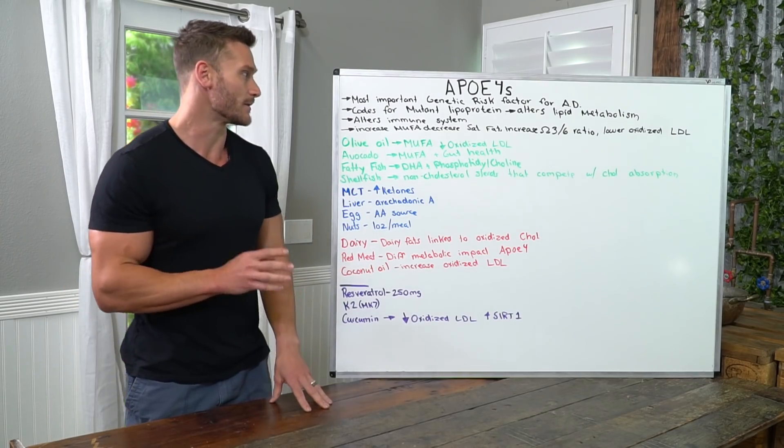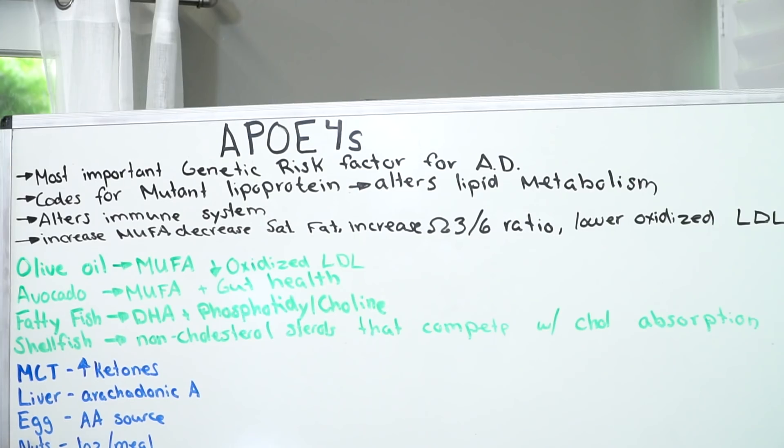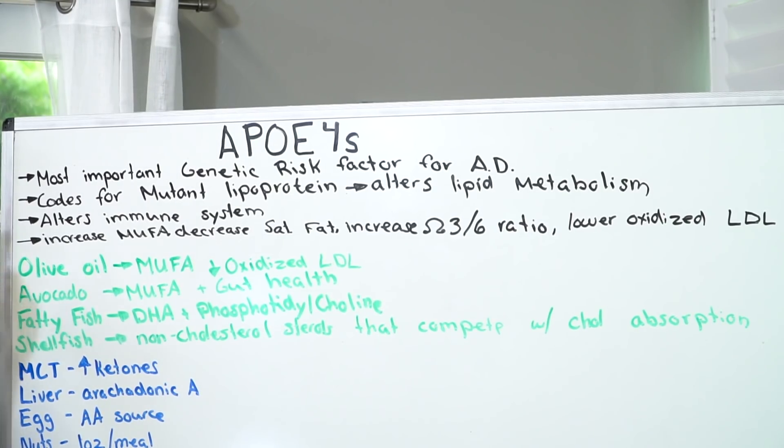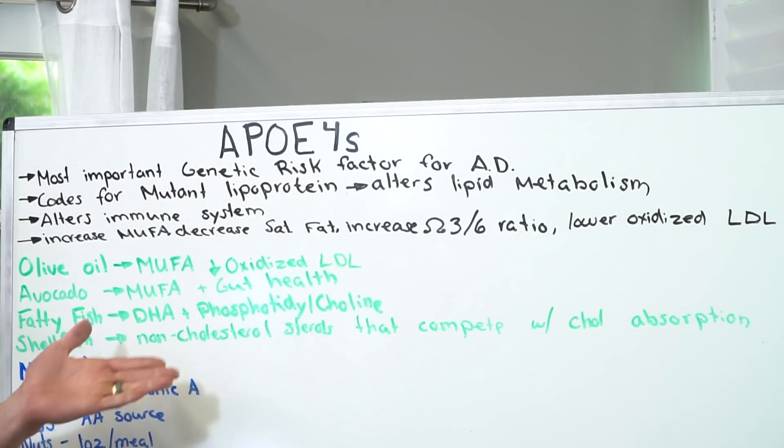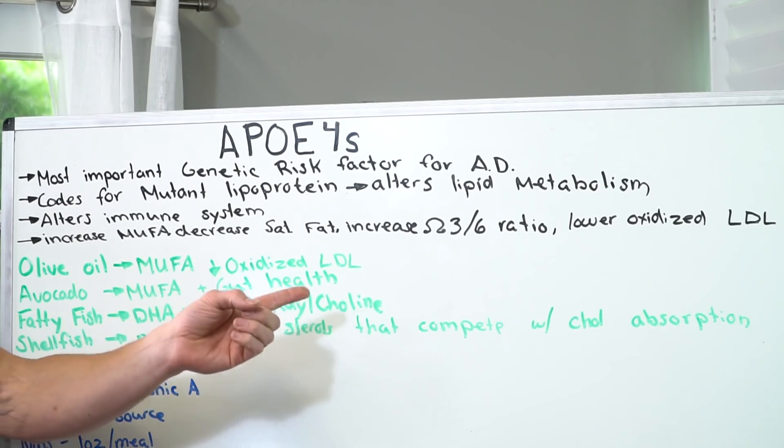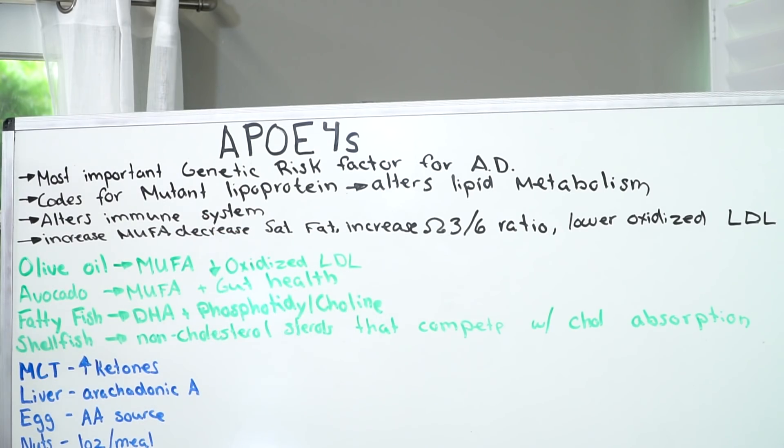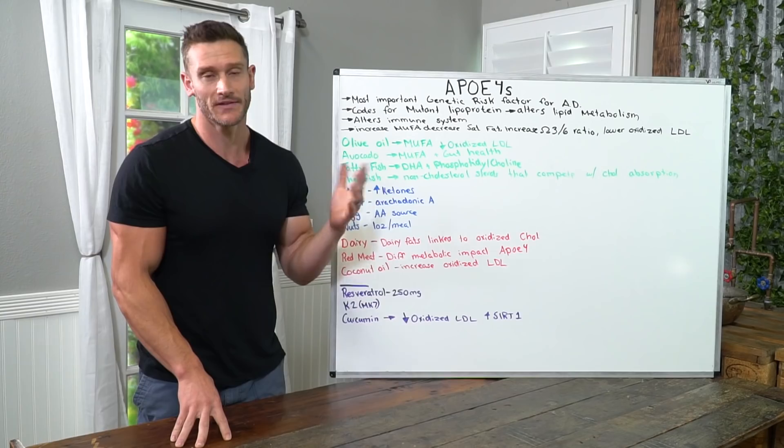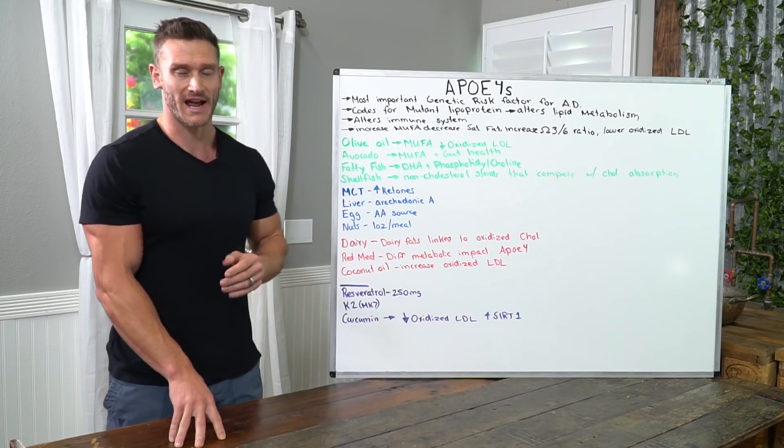The main four things that we really want to be paying attention to with APOE4 on the ketogenic diet are going to be increasing monounsaturated fatty acids, which we'll talk about, decreasing your saturated fat, increasing omega three to six ratio, lowering your oxidized LDL, and then ultimately lowering inflammation too, which kind of goes without saying.